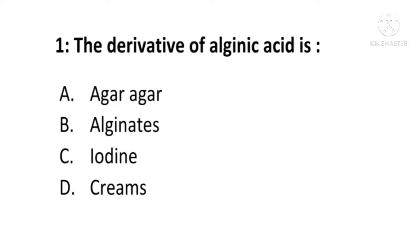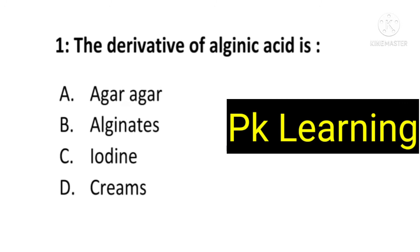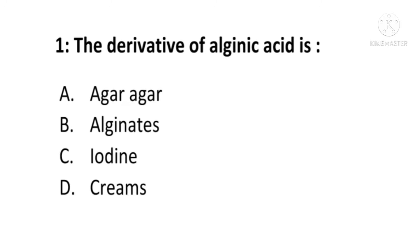Welcome to PK Learning. In this video we will discuss important MCQs for all competitive exams and entrance tests. First question: the derivative of alginic acid is — agar agar, alginates, iodine, or creams? The answer is B, alginates. The derivative of alginic acid is alginates. B is the correct option.